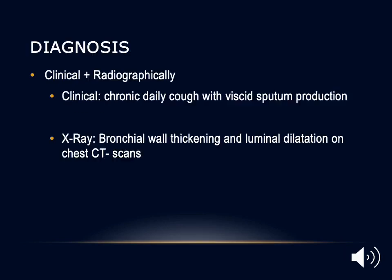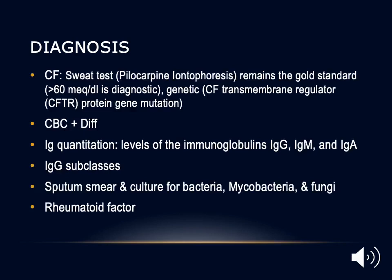The purpose of diagnostic evaluation is radiographic confirmation of the clinical presentation. Patients with chronic daily cough and sputum production will have chest CT showing bronchial wall thickening and luminal dilatation consistent with bronchiectasis. Evaluation may include laboratory and microbiological testing and pulmonary function tests. For cystic fibrosis, the sweat test — pilocarpine iontophoresis — remains the gold standard. We may also look for genetic mutations in the cystic fibrosis transmembrane conductance regulator. A CBC with differential is ordered looking for eosinophilia, and immunoglobulin quantification — especially IgG, IgM, and IgA — helps evaluate for immunodeficiency.